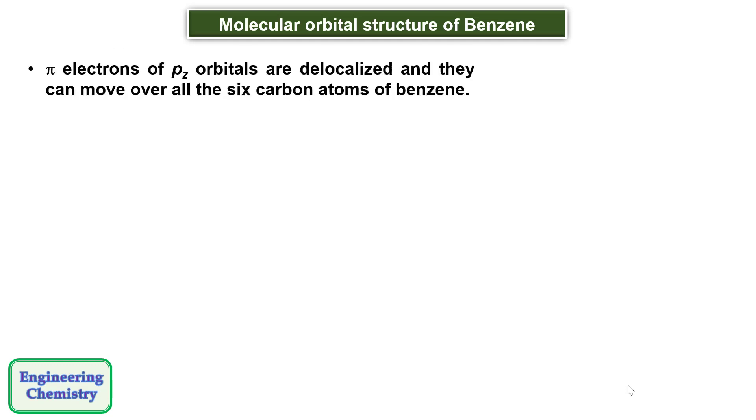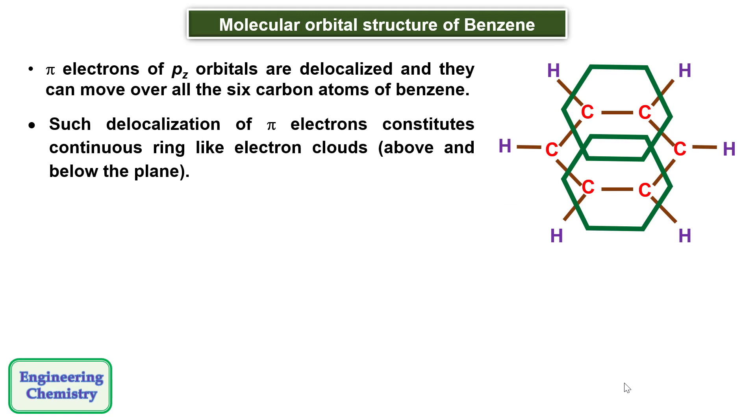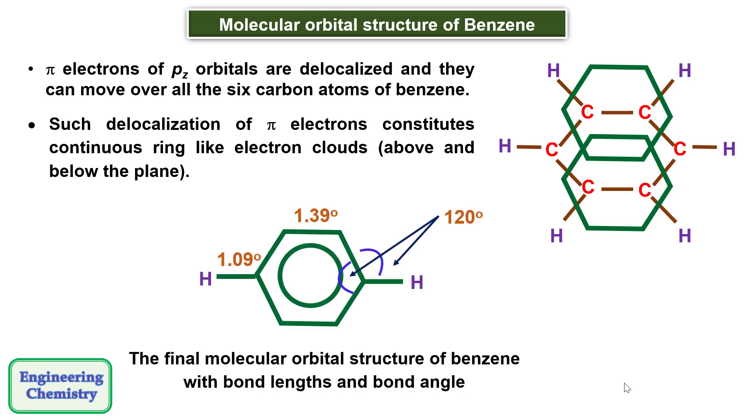Pi electrons of pz orbitals are delocalized and they can move over all the six carbon atoms of benzene. Such delocalization of pi electrons constitutes continuous ring-like electron clouds above and below the plane. The final molecular orbital structure of benzene can be represented like this.